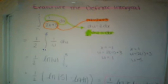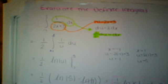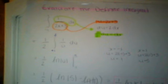We'll let u equal 2x plus 3, and du equals 2 dx. We're looking for 1 dx, so we divide du by 2, which gives us 1/2 du equals dx.